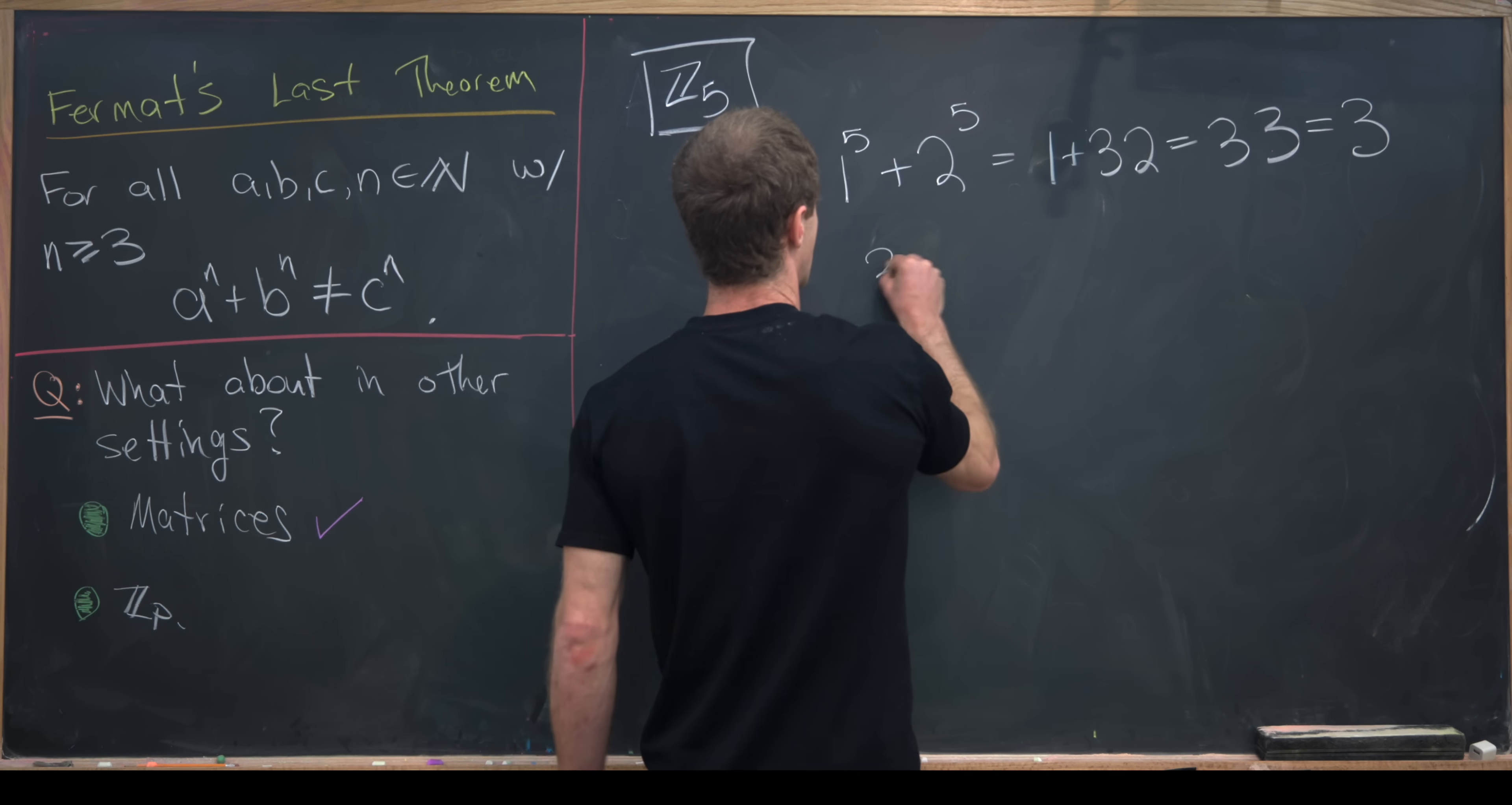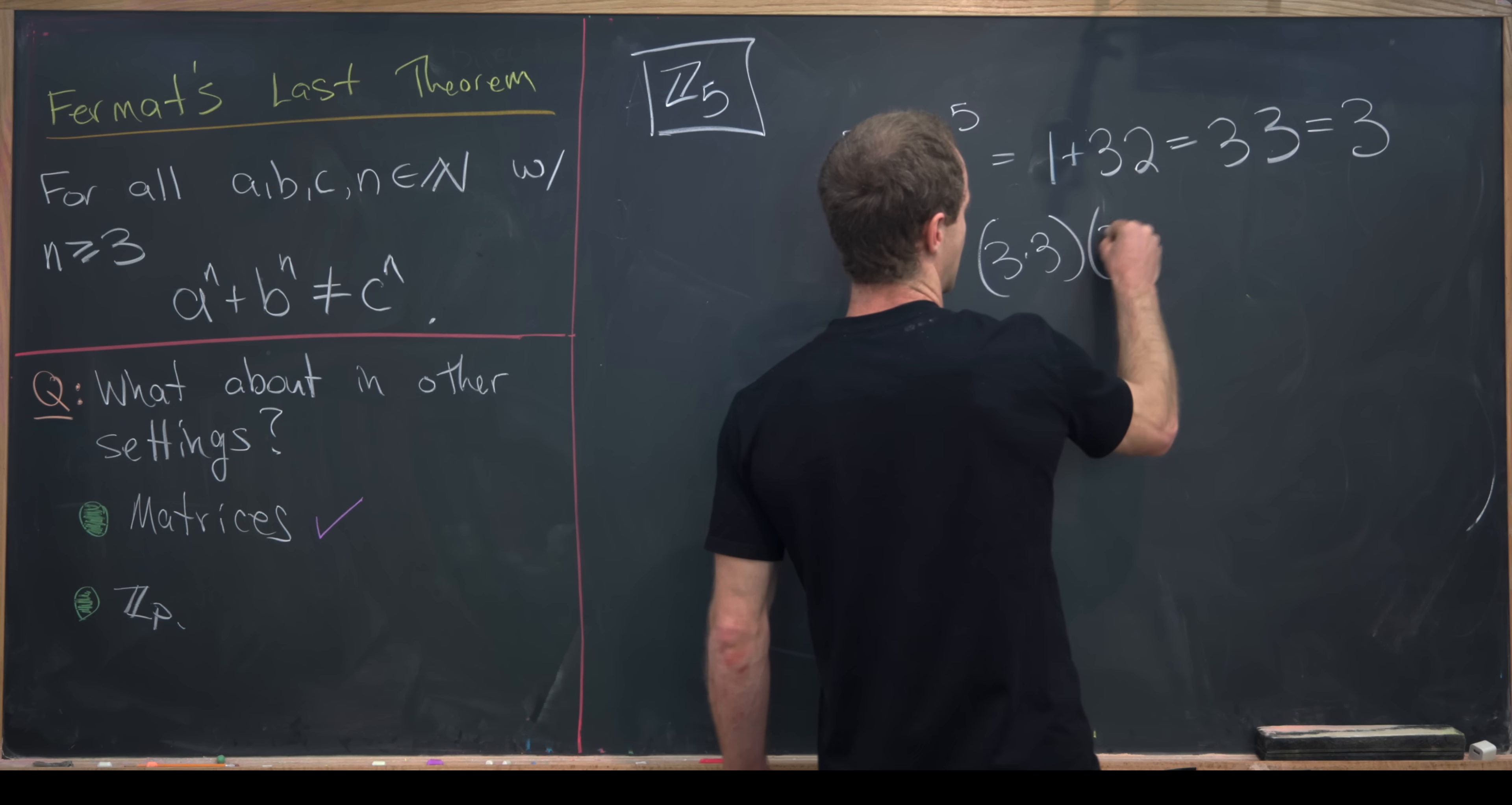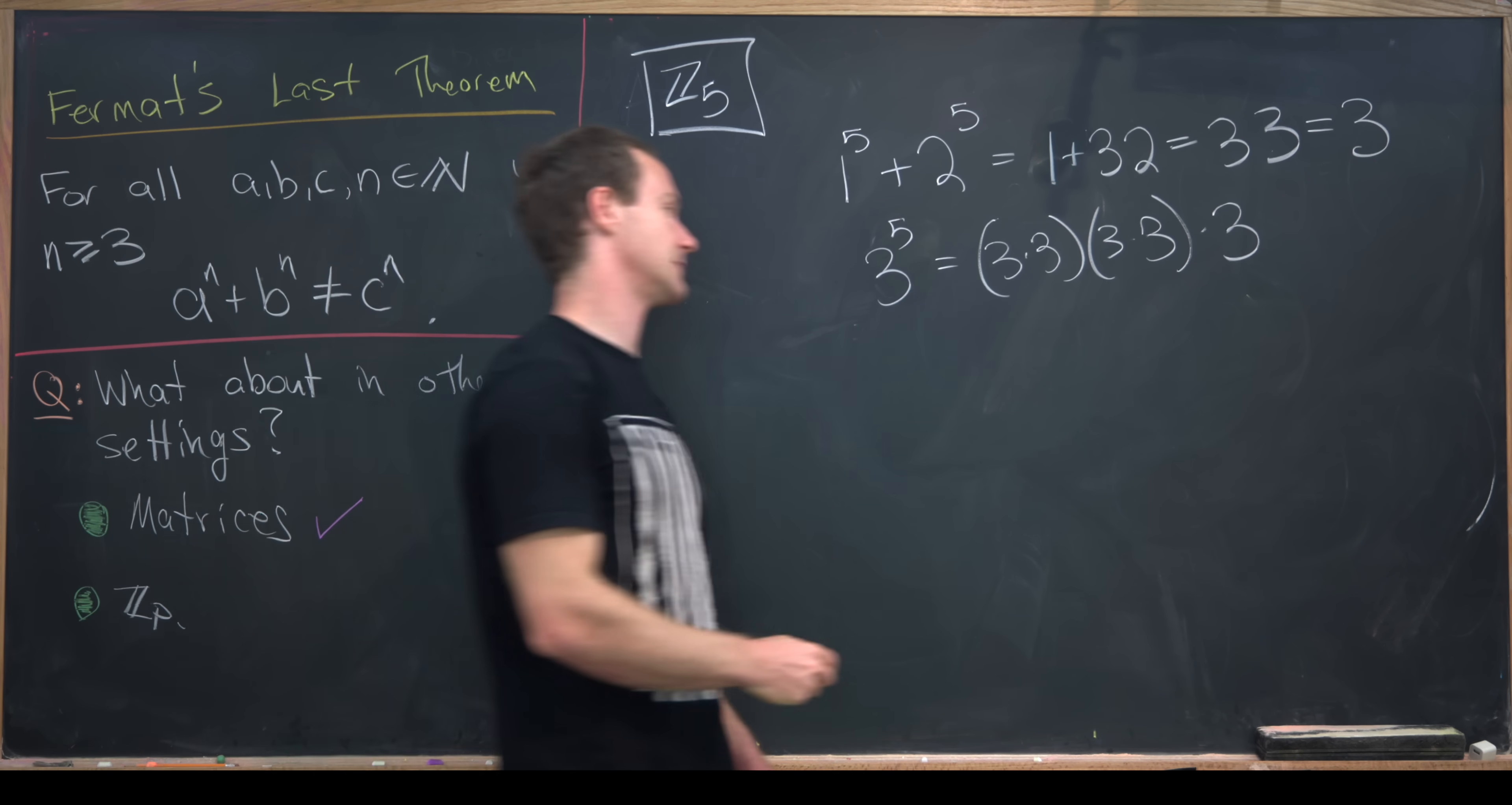Now let's look at 3 to the 5th. Notice that 3 to the 5th is 3 times 3, and then 3 times 3 times 3. I've done that so that we can simplify kind of one step at a time.